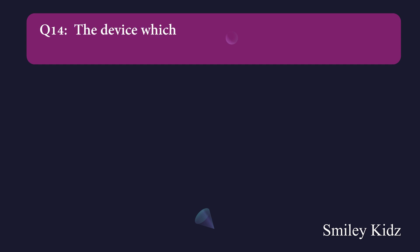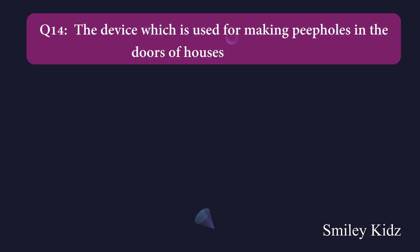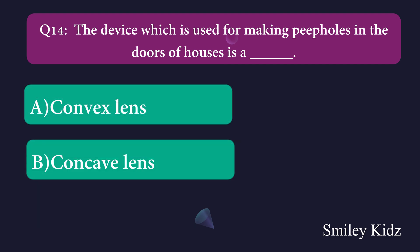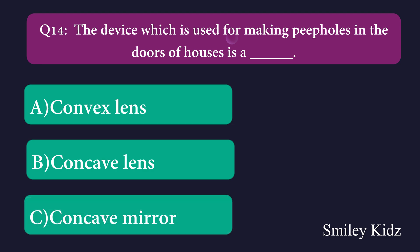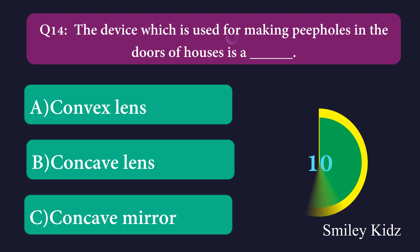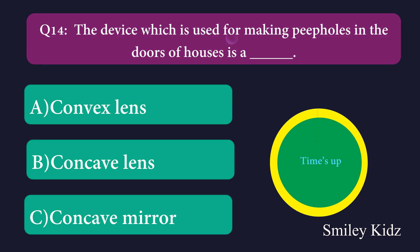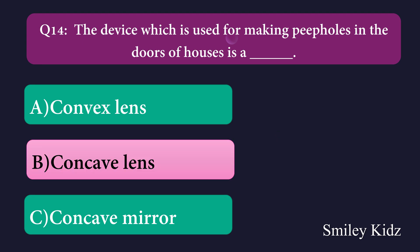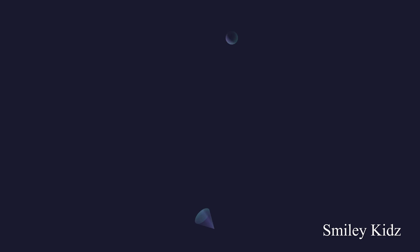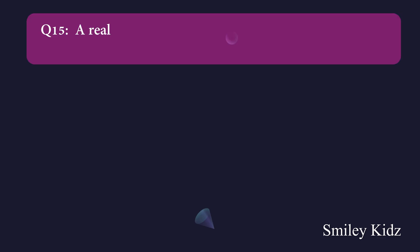Question number fourteen: The device which is used for making deep holes in the doors of houses is a dash. Option A: convex lens, Option B: concave lens, Option C: concave mirror. The right answer is concave lens. The device used for making deep holes in the doors of houses is a concave lens.